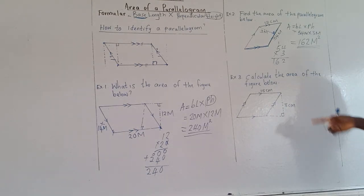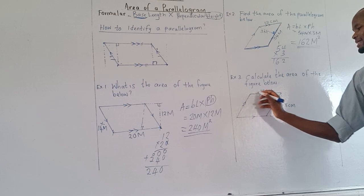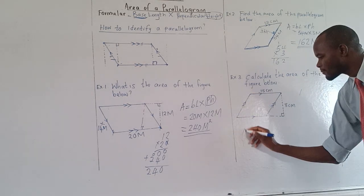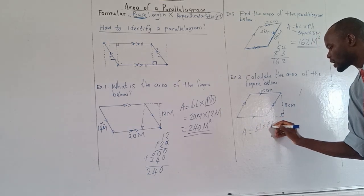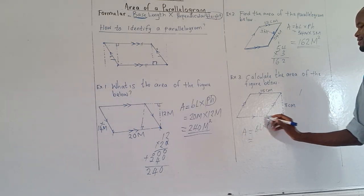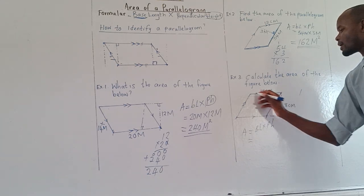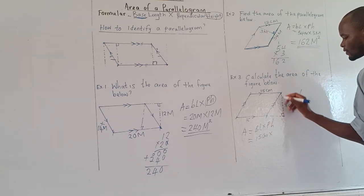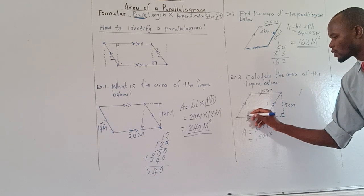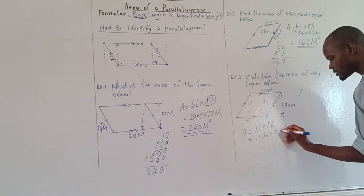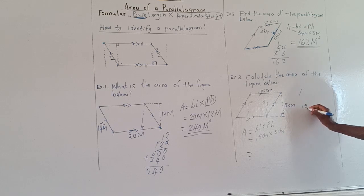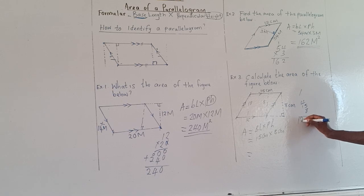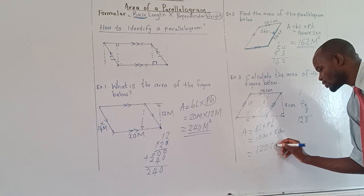Example 3: Calculate the area of the figure below — remember we are talking about the shaded one with the dark line. Area is base length times perpendicular height. The base length is this line from here up to here, which is 15 centimeters. The perpendicular height is 8 centimeters — if here we have 8, it means here we also have 8. So the area is 15 times 8: 8 times 5 is 40, carry 4; 8 times 1 is 8 plus 4 is 12. The answer is 120 centimeters square.